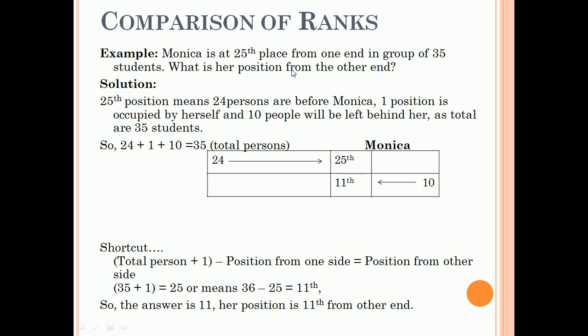From one end she is at 25th place, so what is the position from the other end? 25th position means 24 persons are before her, one position is occupied by herself, and from the other side 10 people are there.